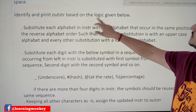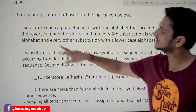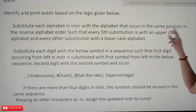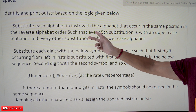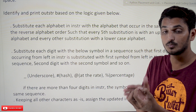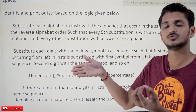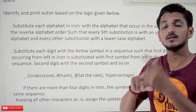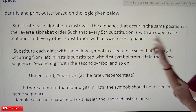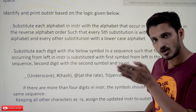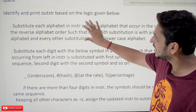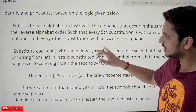The logic says: substitute each alphabet in 'instr' with the alphabet that occurs in the same position in the reverse alphabet order. If you see alphabet 'a' in your input string, replace it with 'z'; 'b' with 'y' — in reverse order. Additionally, every fifth substitution should be with an uppercase alphabet — so the fifth alphabet encountered should be uppercase.